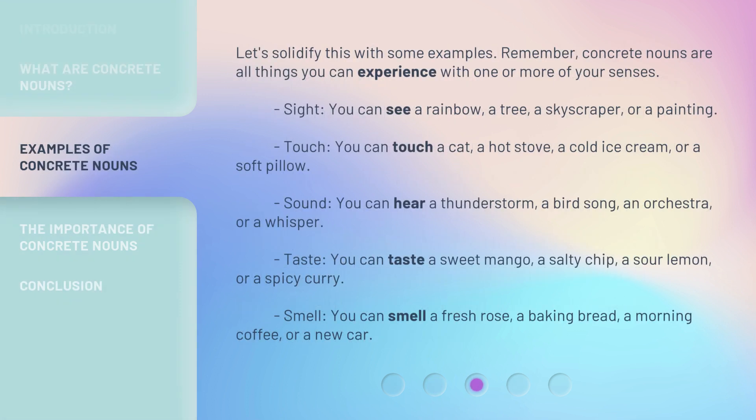Let's solidify this with some examples. Remember, concrete nouns are all things you can experience with one or more of your senses. Sight: you can see a rainbow, a tree, a skyscraper, or a painting. Touch: you can touch a cat, a hot stove, a cold ice cream, or a soft pillow. Sound: you can hear a thunderstorm, a bird song, an orchestra, or a whisper.